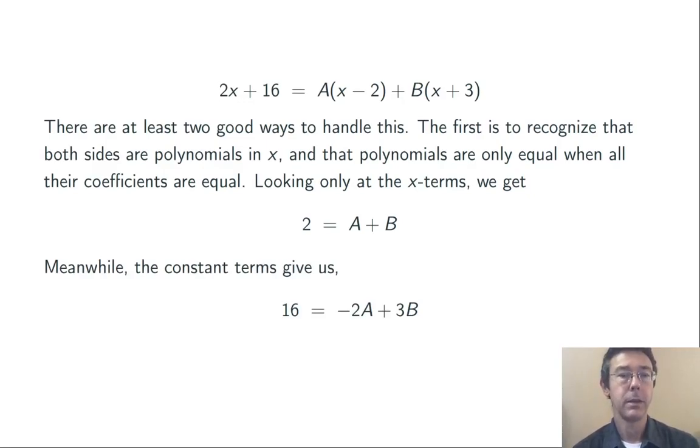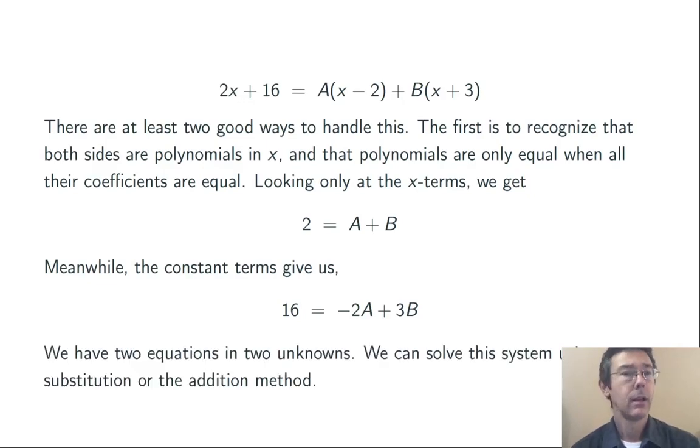Similarly, the constant terms have to be equal. So 16 has to equal -2A + 3B. We now have two equations in two unknowns, A and B,